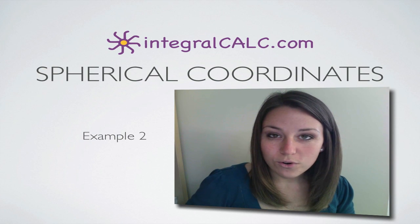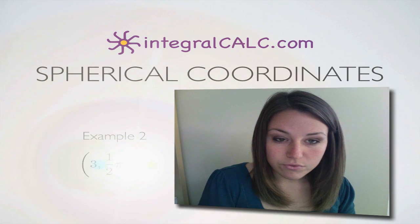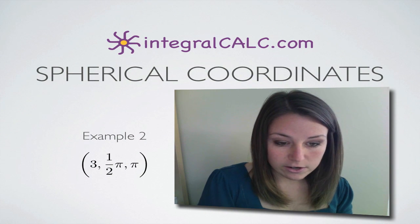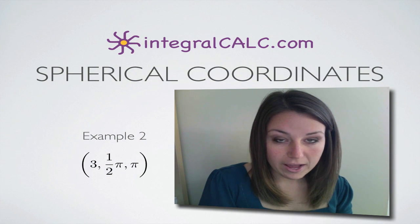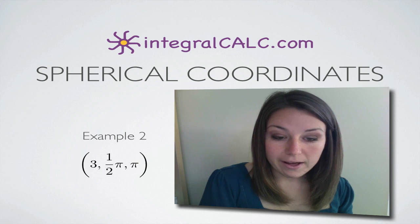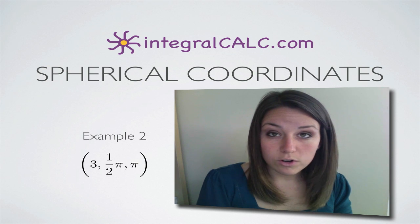Today we're going to be doing another spherical coordinates problem and we're going to be converting these spherical coordinates here, 3, one half pi or pi over 2, pi to rectangular or Cartesian coordinates.